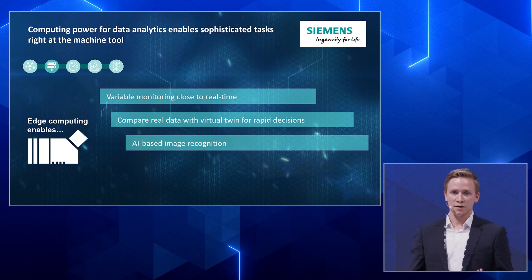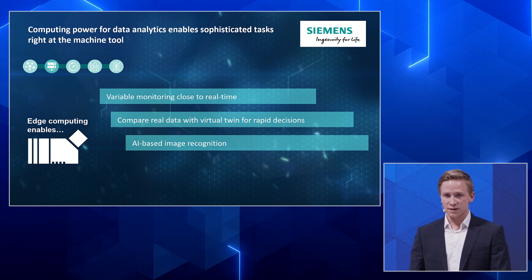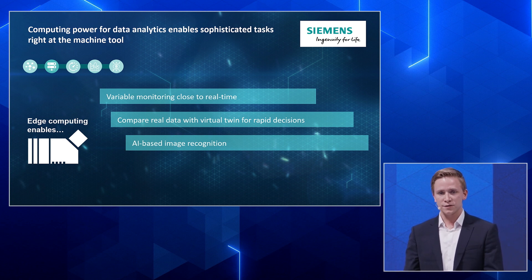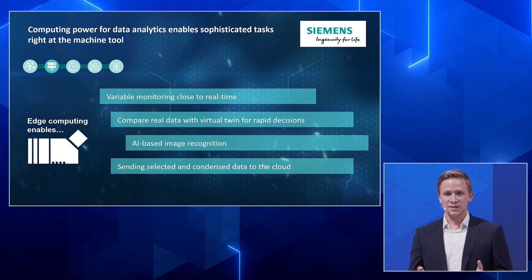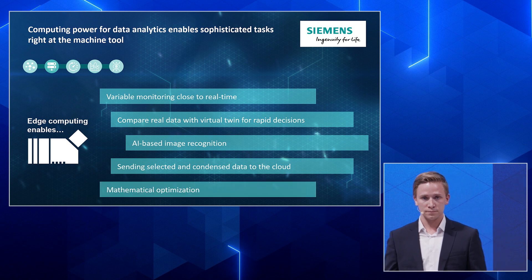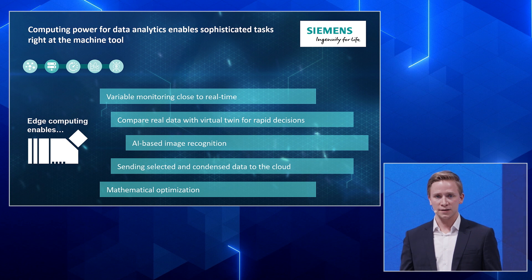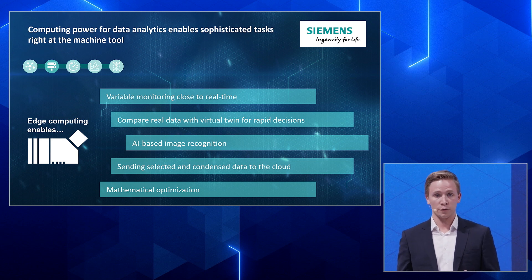Third, you could use AI-based image recognition on the edge device to verify whether the correct workpiece is in the machine tool. Fourth, you could send condensed data to the cloud to provide an overview of the status of your machines. Fifth, there is mathematical optimization on the machine tool — in this case, optimizing the position of tools inside a magazine.